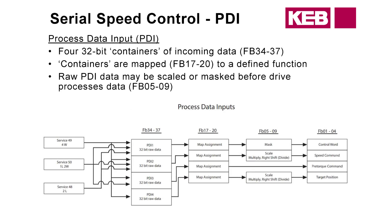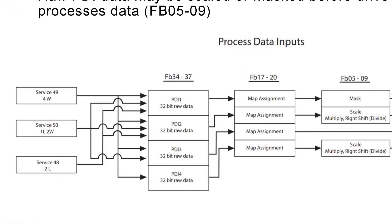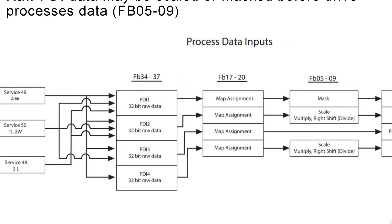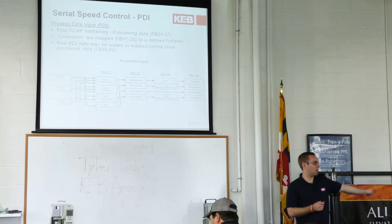To break down the process data inputs — what's coming over from the controller — look at the Service 49 protocol. We call them four 32-bit containers of information, sometimes referred to as packets of information coming over the serial bus. These inputs come over to FB17 through FB20 where they get their map assignment. So the drive says, 'I've got this data, it's going to go to this parameter, it's going to go to that parameter.'